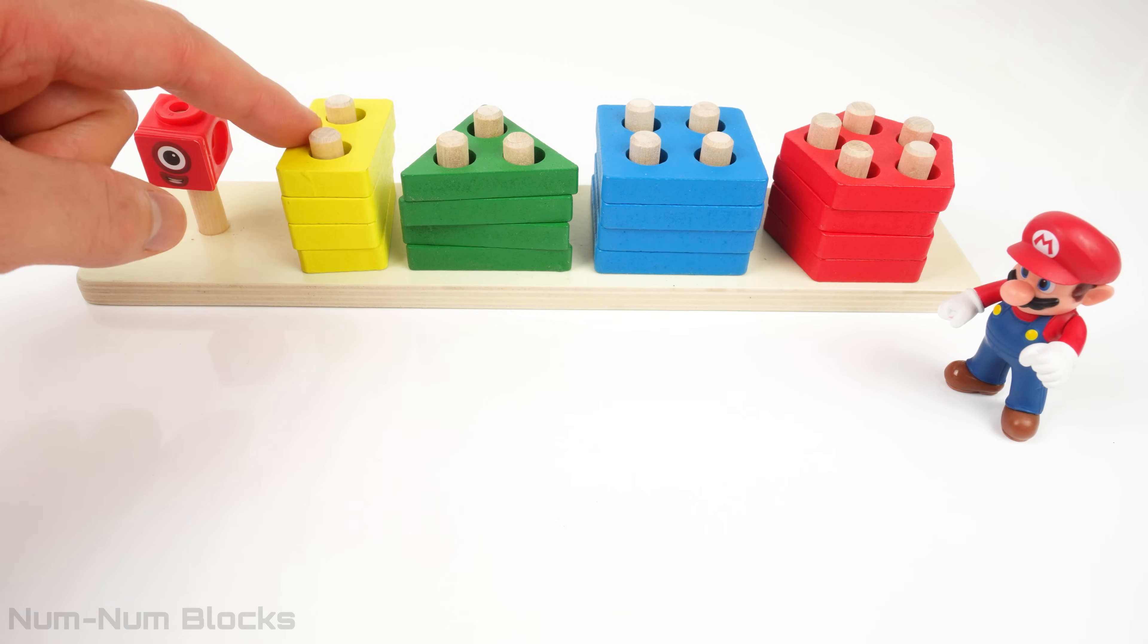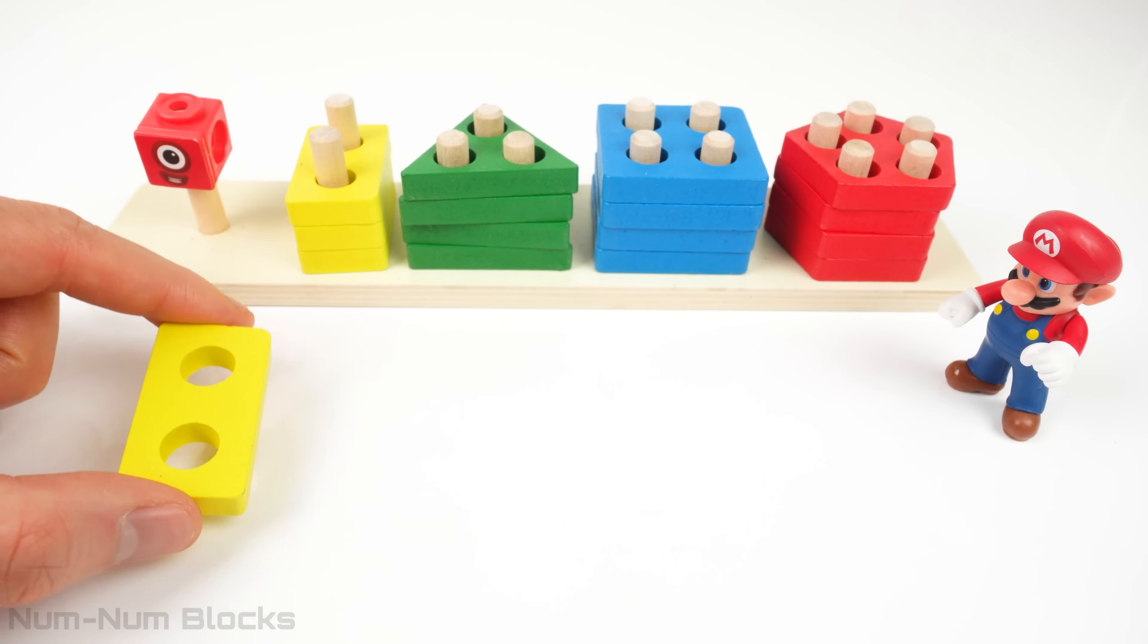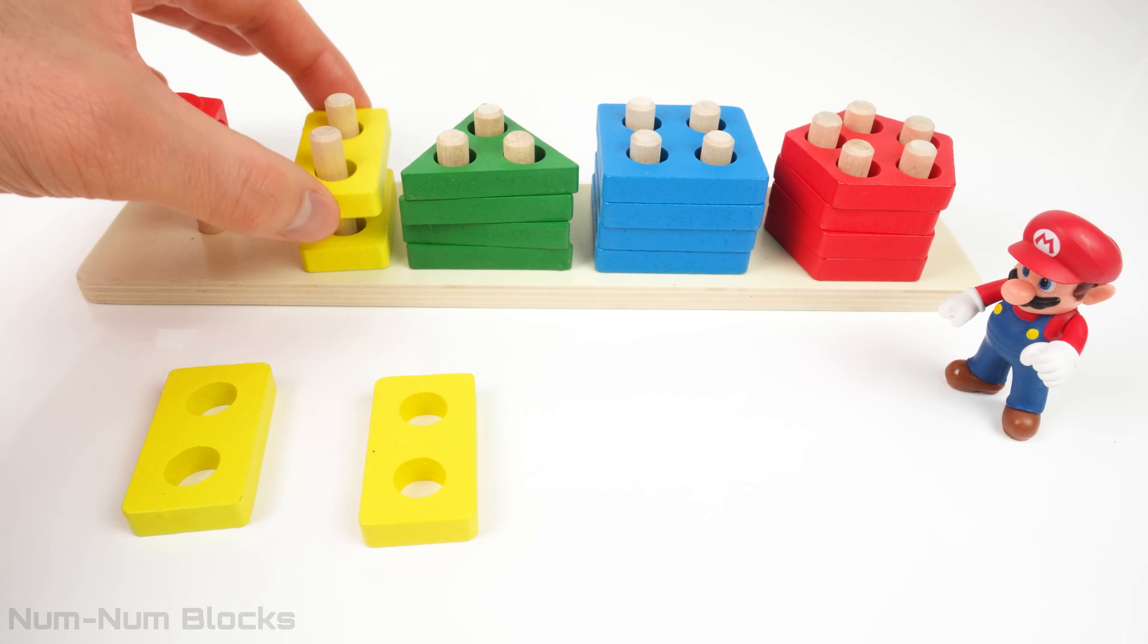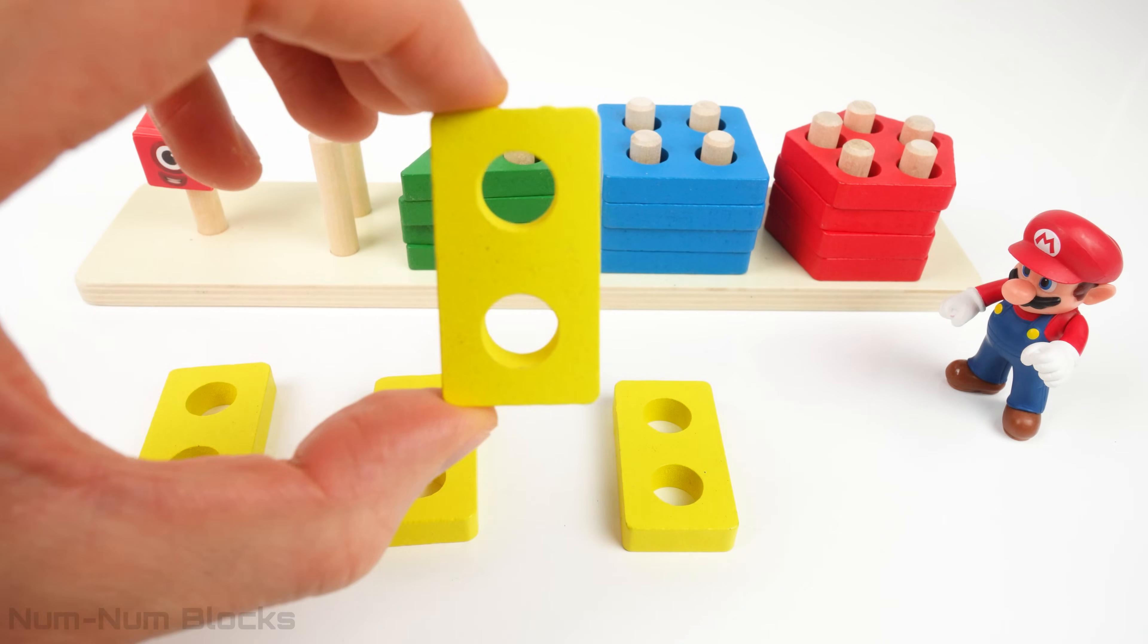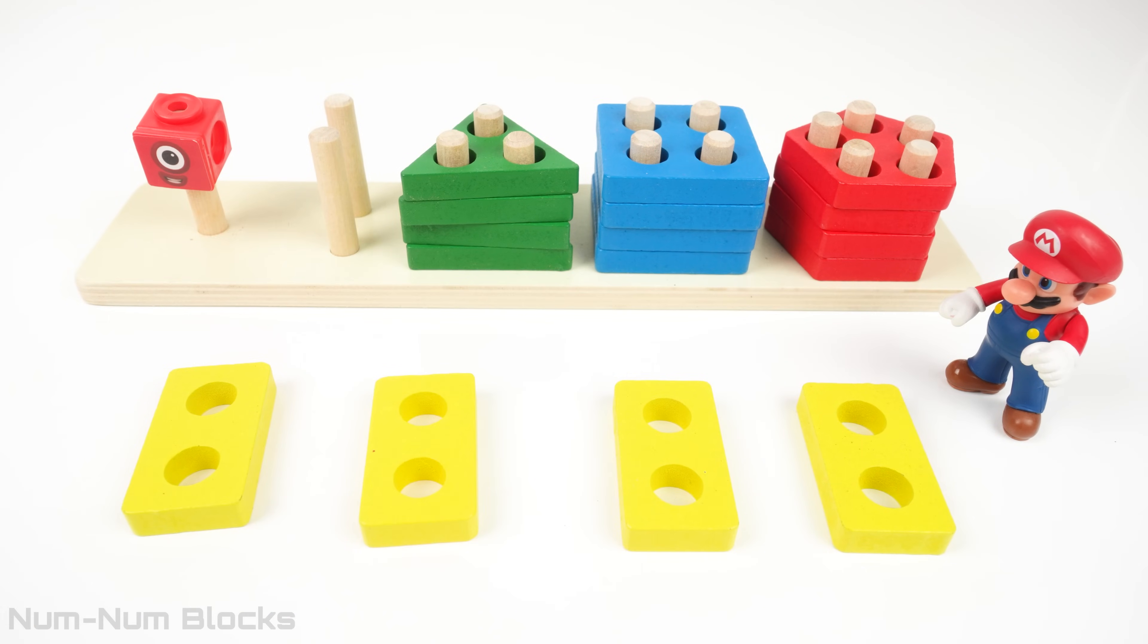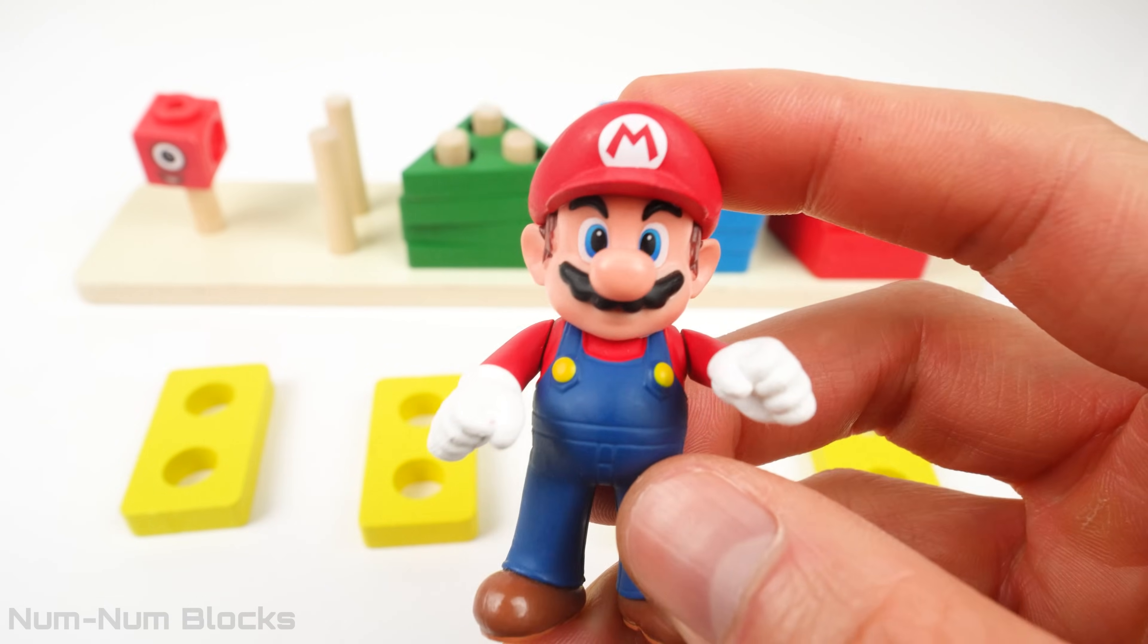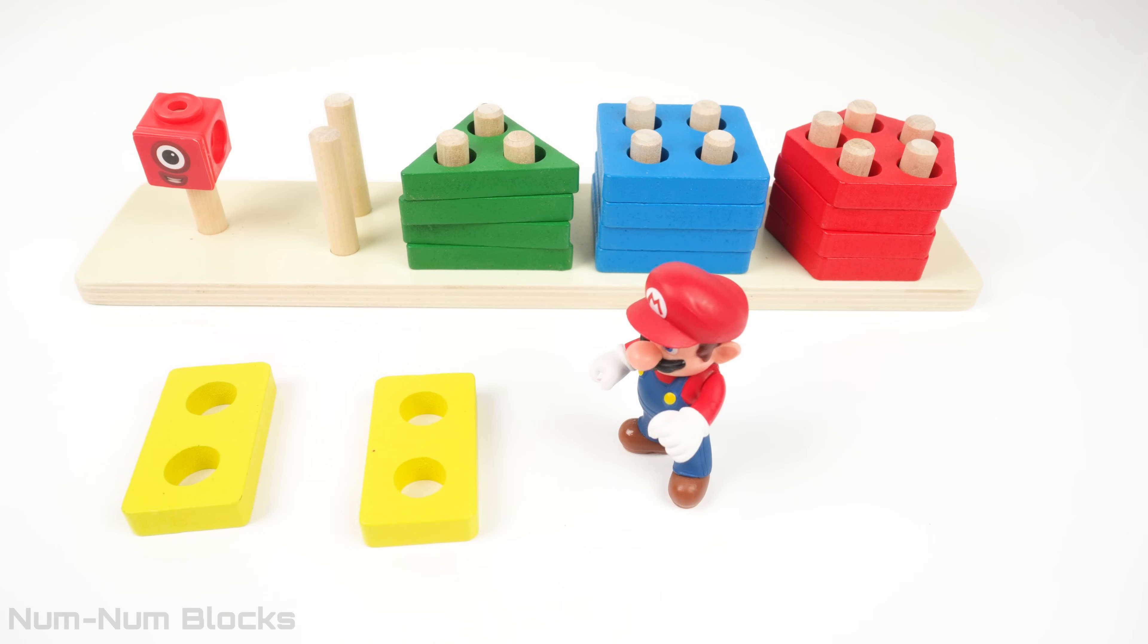Now it's time to make number block two from the yellow rectangles with two holes. We have one, two, three, four. Four yellow rectangles. To get to two rectangles, how many does Mario need to remove? Let's-a go! Two! Because four minus two equals two.